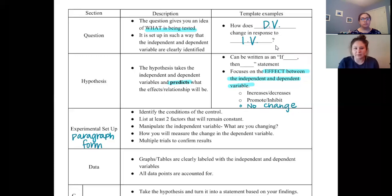So you are going to identify the conditions of the control. Now one thing I want to point out about the control is this is going to be your baseline for comparing your normal. So you're going to identify what you're comparing your experimental data to. You are going to list at least two factors that are going to remain constant. That means in both your experimental and your control setup you're going to have this thing constant. You need at least two of those.